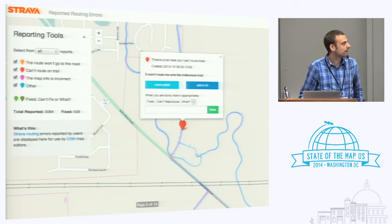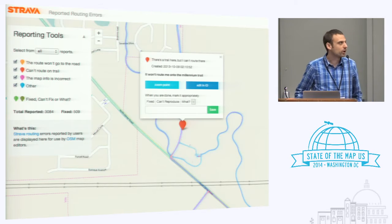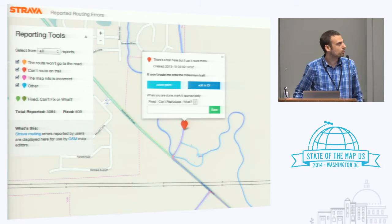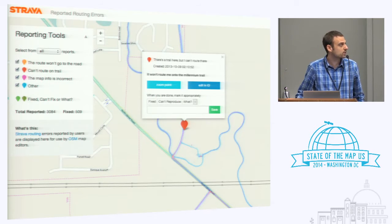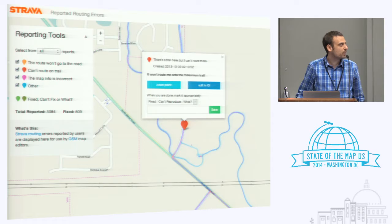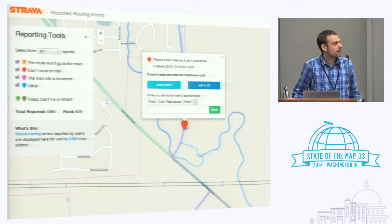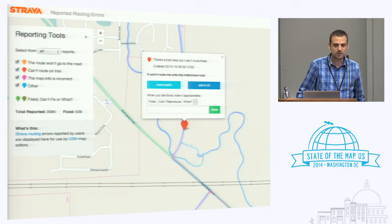A lot of times we get errors like: hey, that bike trail doesn't exist in the map. What you're looking at here is just the OSM base map with our heatmap data on top. That blue, purple, reddish line is about 200 billion data points and 100 million rides aggregated together. Redder is hotter, bluer is colder, and we have this worldwide dataset. You can see from the heatmap that there's clearly some sort of bike or running path there — it's complicated and twisty, but it's there in real life and it's not in OSM.